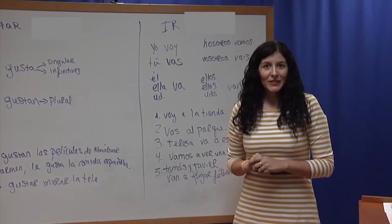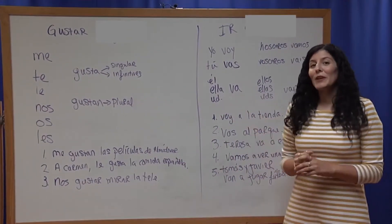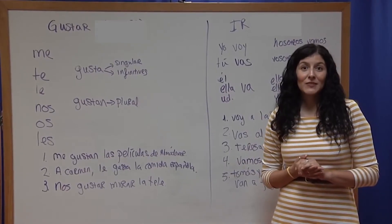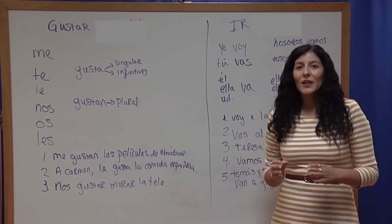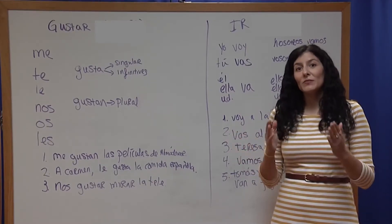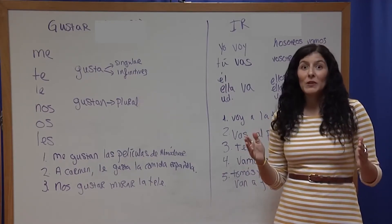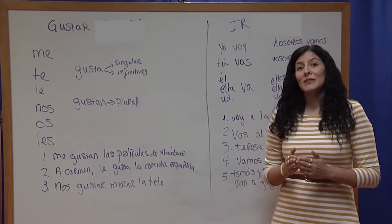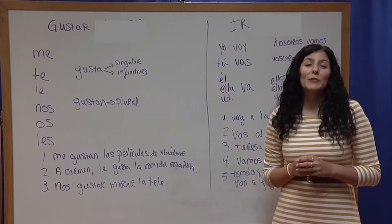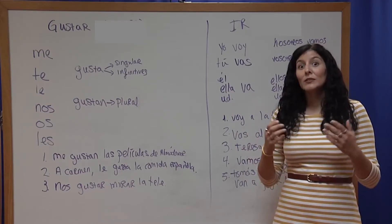Now we are going to talk about two irregular verbs: gustar and ir. We have already talked about one irregular verb in the form of ser, which means 'to be.' When we say a verb is irregular, we mean it simply doesn't follow some type of pattern. When we say a verb is regular, we mean it follows a regular pattern. When we say it's irregular in yo, it follows an irregular yo pattern. When we say it is a stem-changing verb, it follows a stem-changing pattern. So when we say a verb is irregular, it simply has no pattern by which we can learn it.